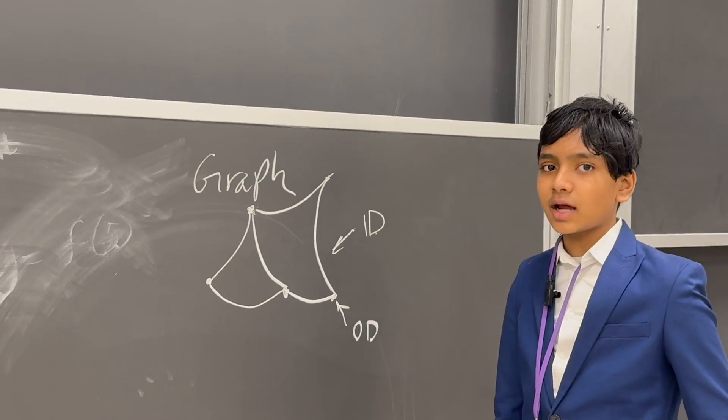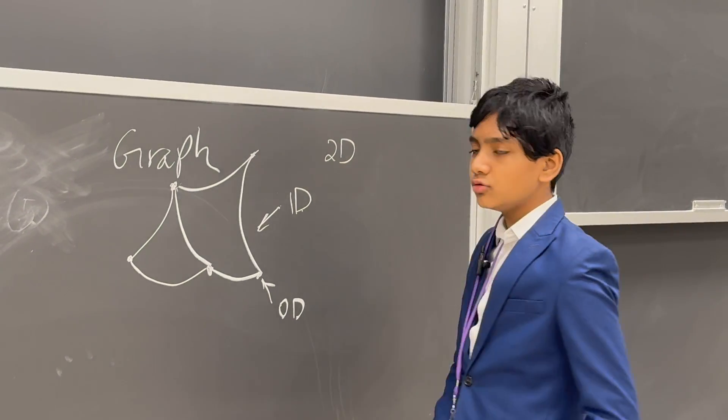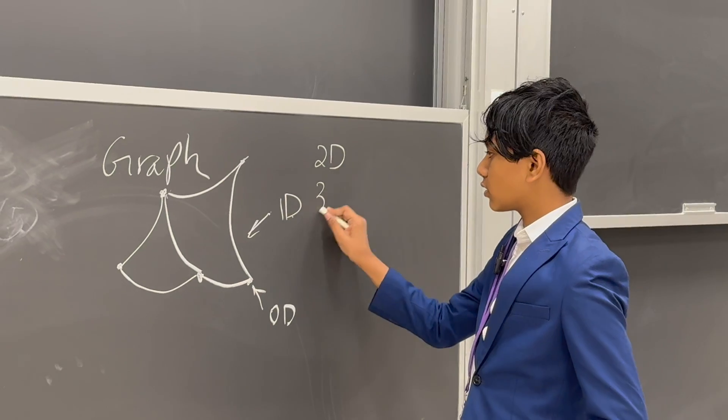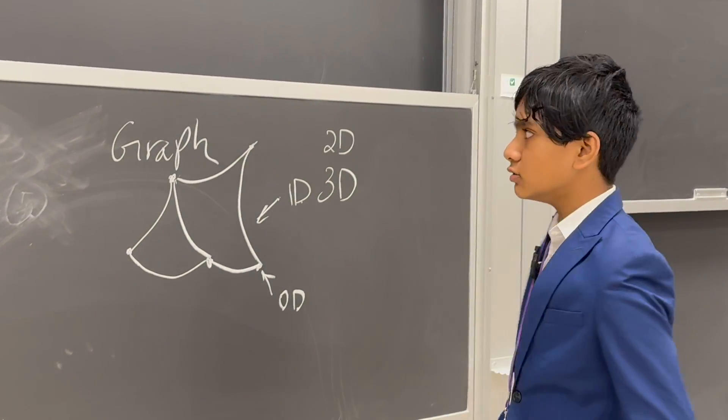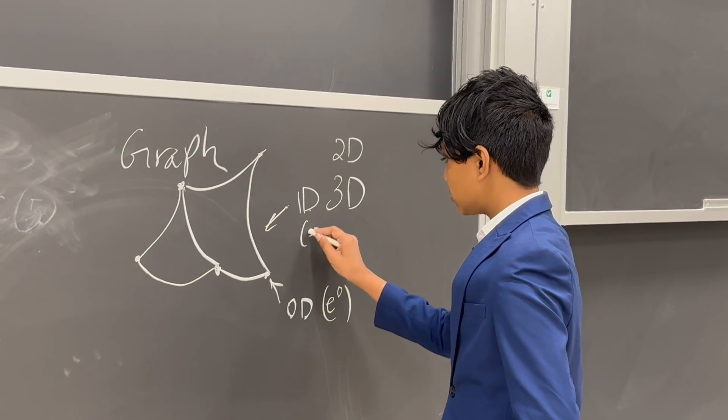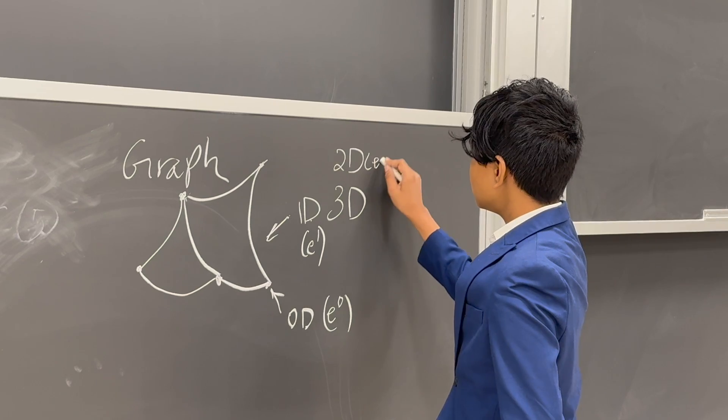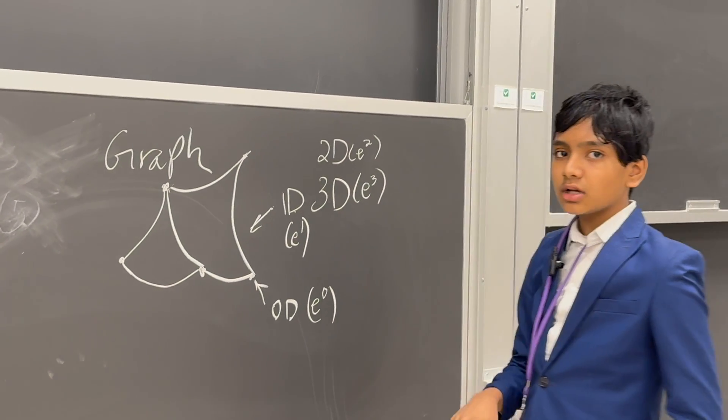Now, what if we added extra dimensions to this? What if we added a two-dimensional or a three-dimensional edge? This would be known as E0, this will be known as E1, E2, E3, so on and so forth.